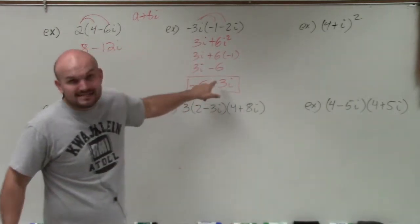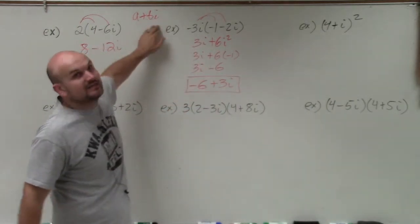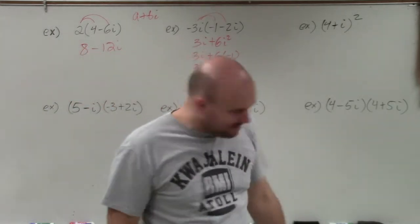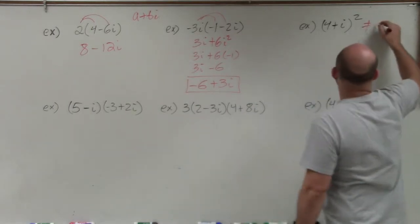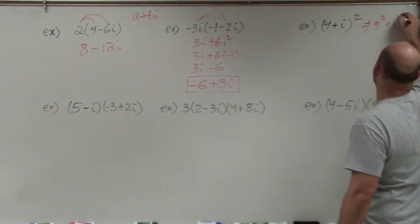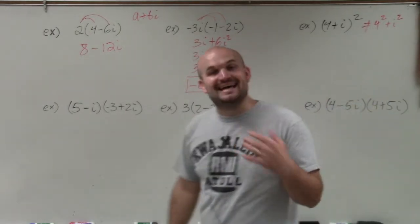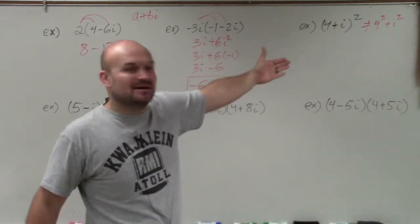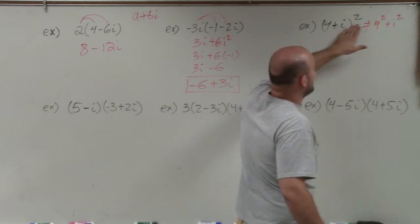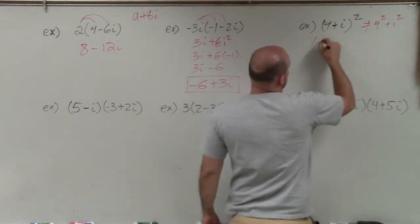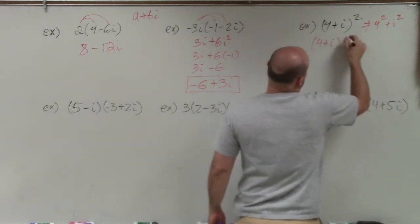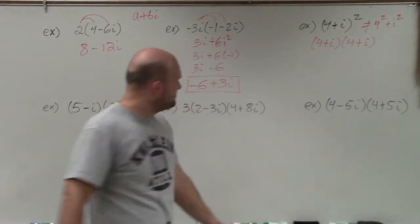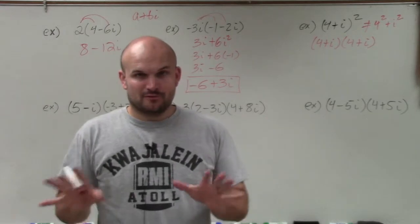Because 3i is positive, you always write it in the form a plus bi. This one gets students all the time — the biggest mistake is saying it's 4 squared plus i squared, which is incorrect. We cannot square across addition or subtraction. So 4 plus i squared means 4 plus i times 4 plus i. I'm going to demonstrate FOIL three different ways.